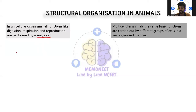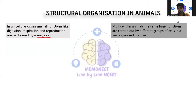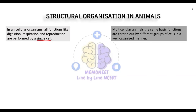I hope you are clear with the basics of structural organization in animals. If you are very clear with the basics, then only you will be able to understand the further topics — that is the morphology and anatomy of animals. First I will do the morphology and anatomy of the frog. After that, I will cover the other topics in your new NCERT textbook — that is cockroach and earthworm. In the next video, I'll be covering the anatomy and morphology of the frog. Thank you.